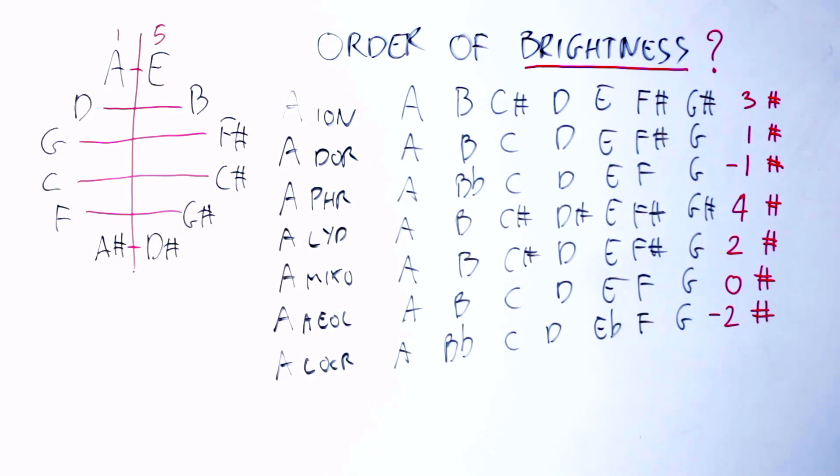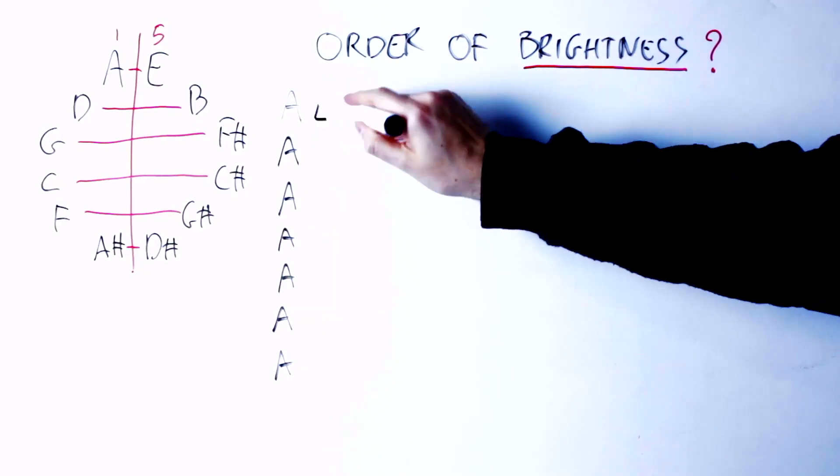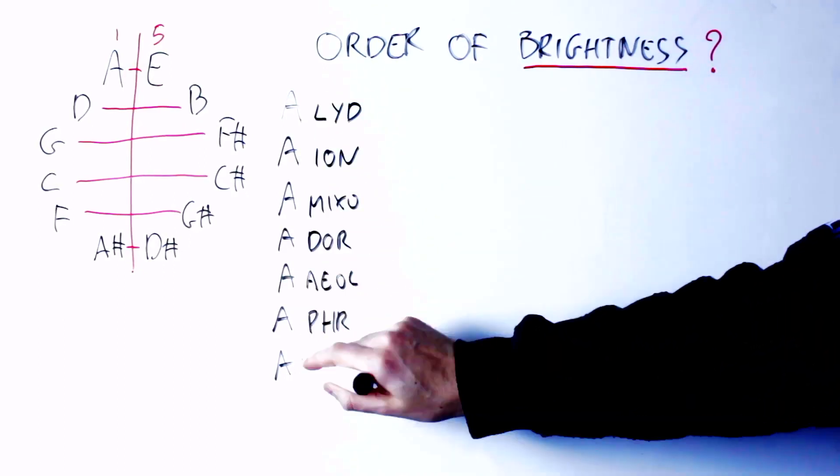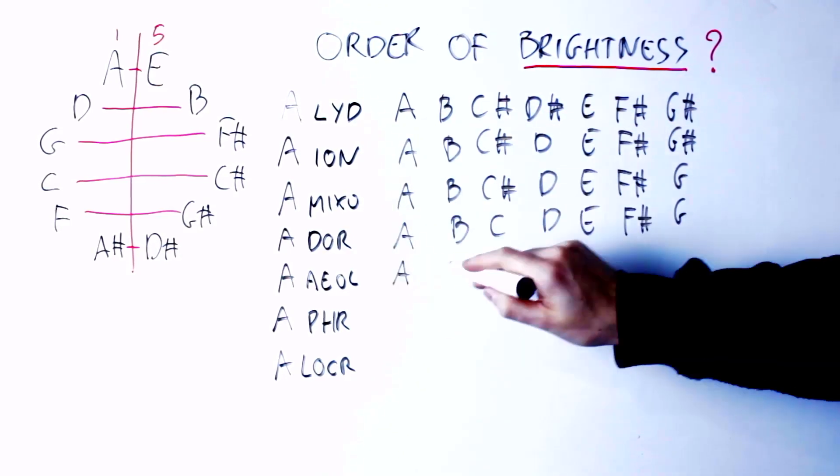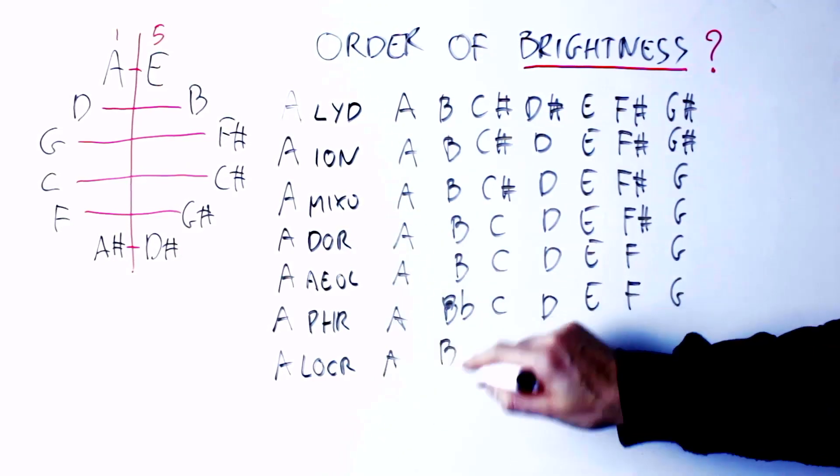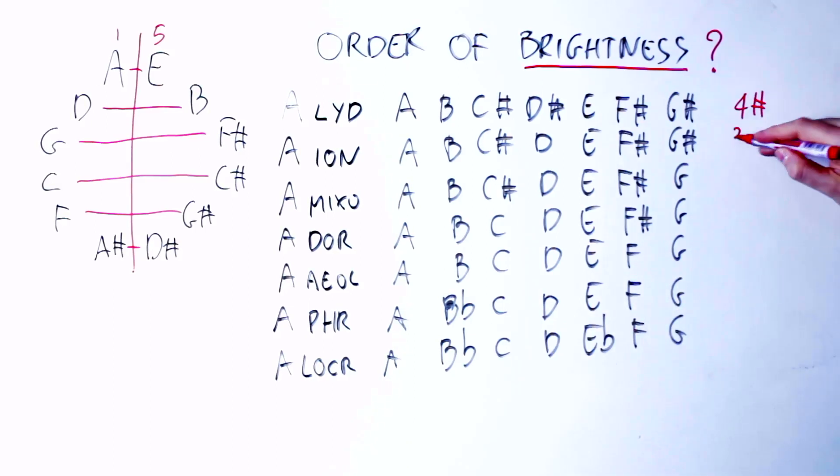Once I've seen this, I order those modes again from the one with the most sharps to the one with the most flats. So my order changes this way: now I have A Lydian with the most sharps, then A Ionian, A Mixolydian, A Dorian, A Aeolian, A Phrygian, A Locrian.